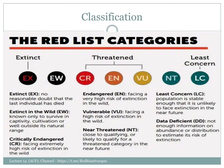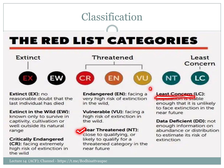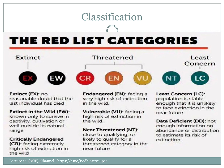Near threatened: species in this category are close to qualifying for a threatened category but are not yet threatened. If they are not protected, they may move into a threatened category. Least concern: Blackbuck is a least concern species, though wildlife protection schedules may differ.